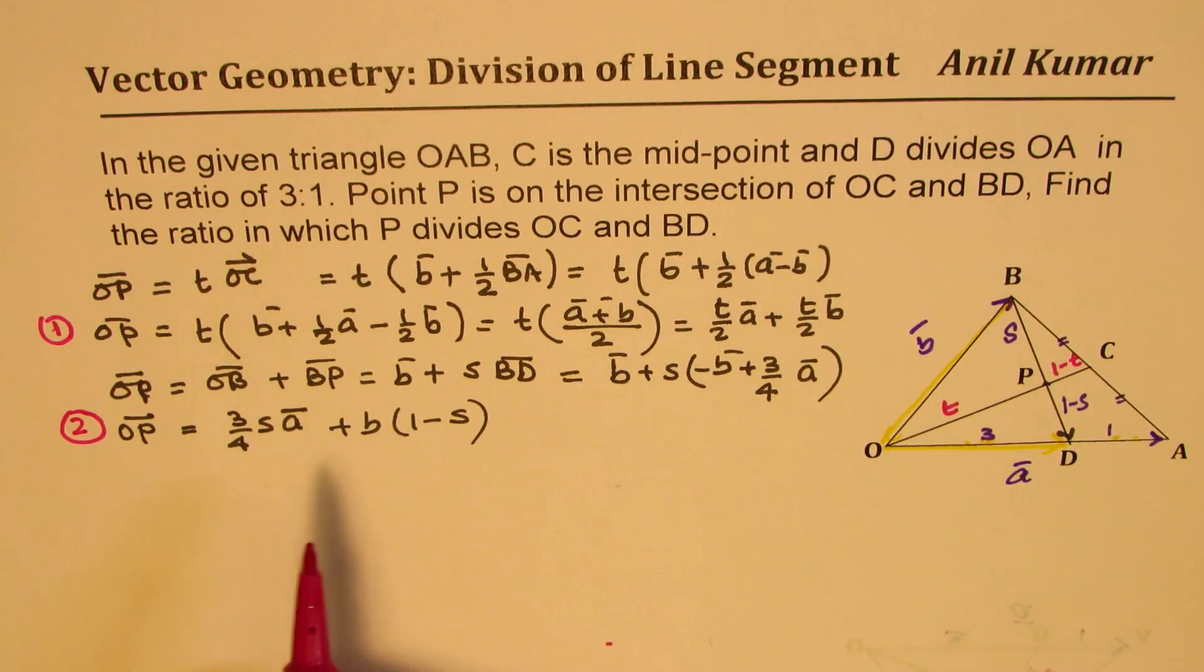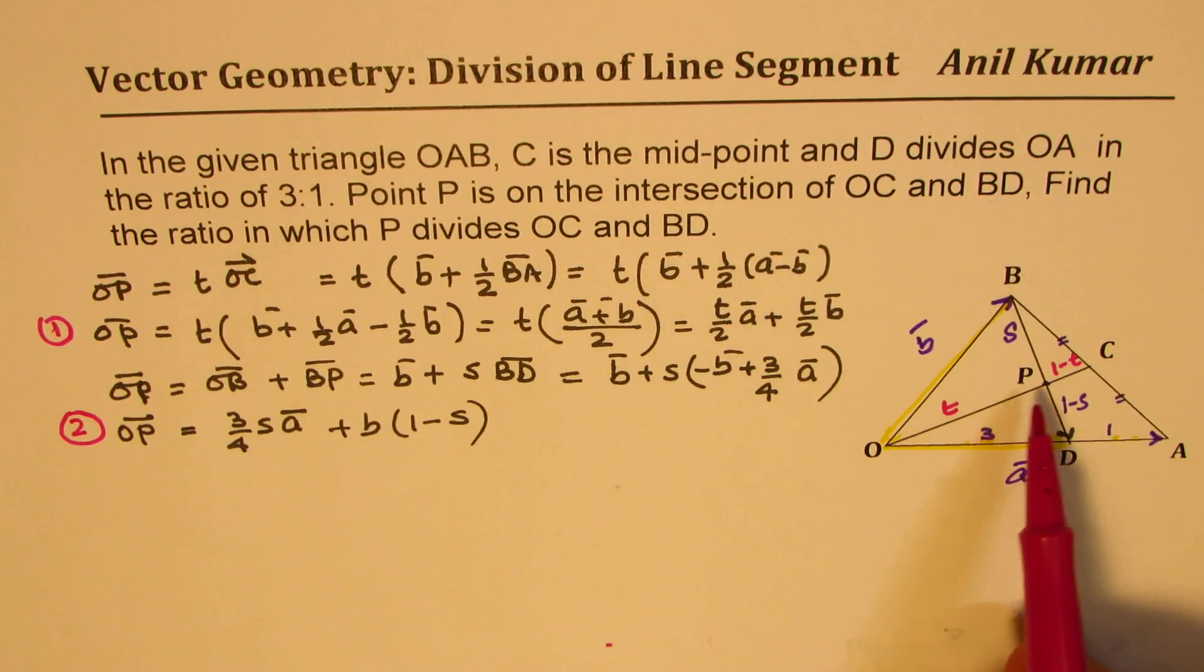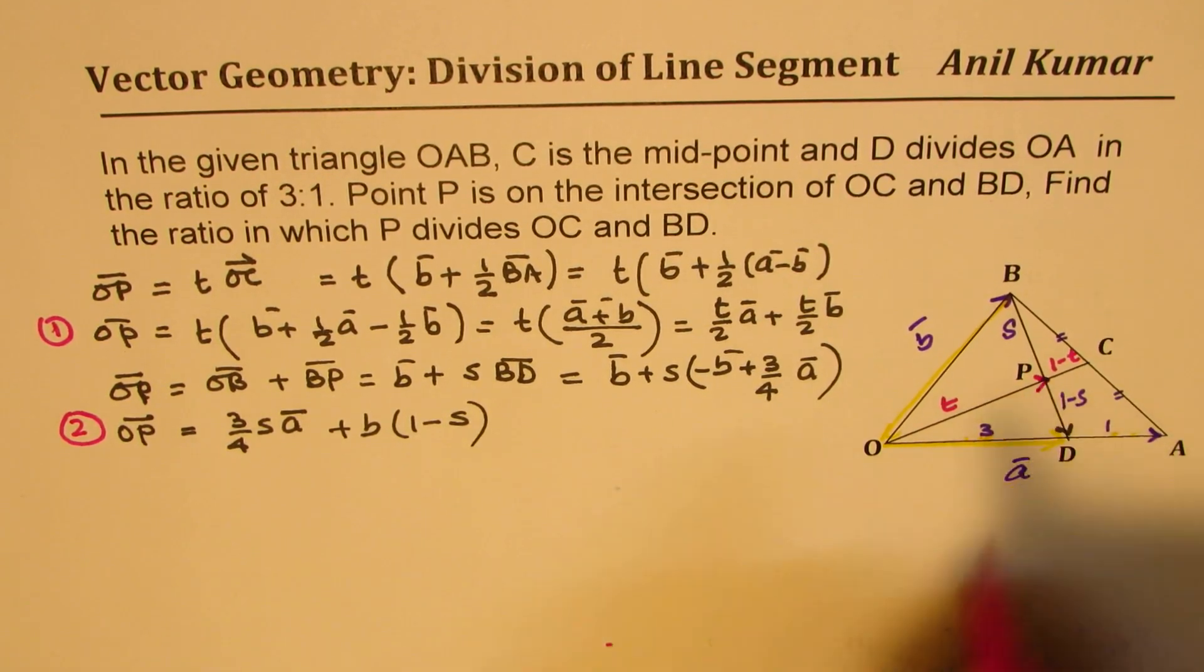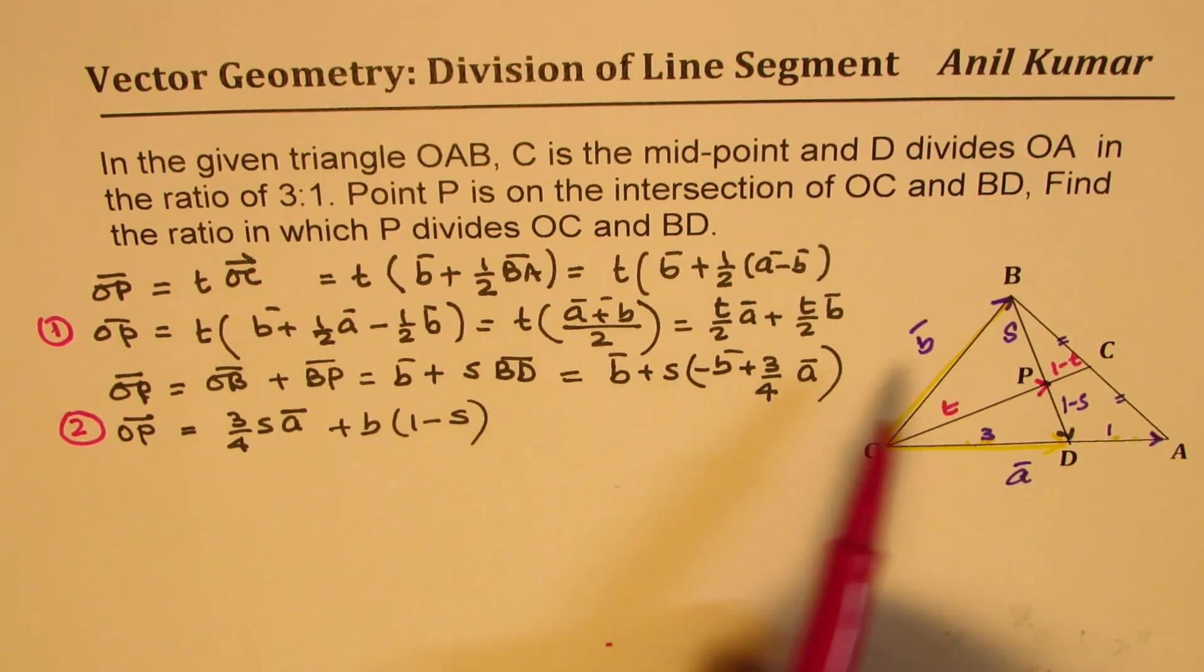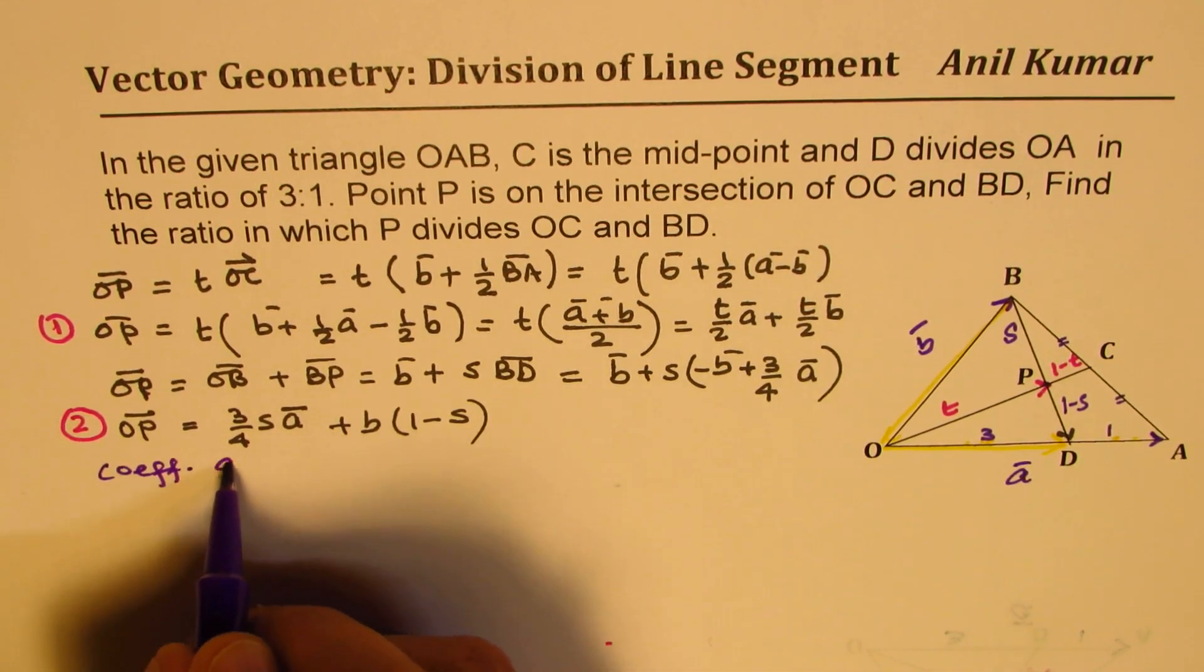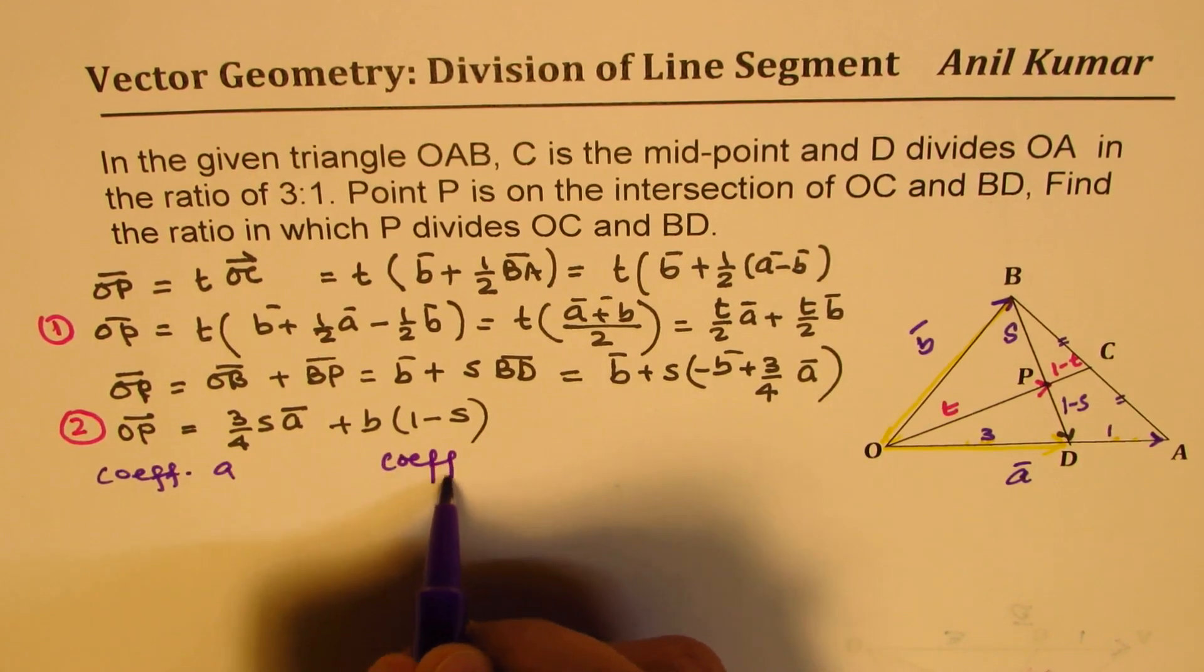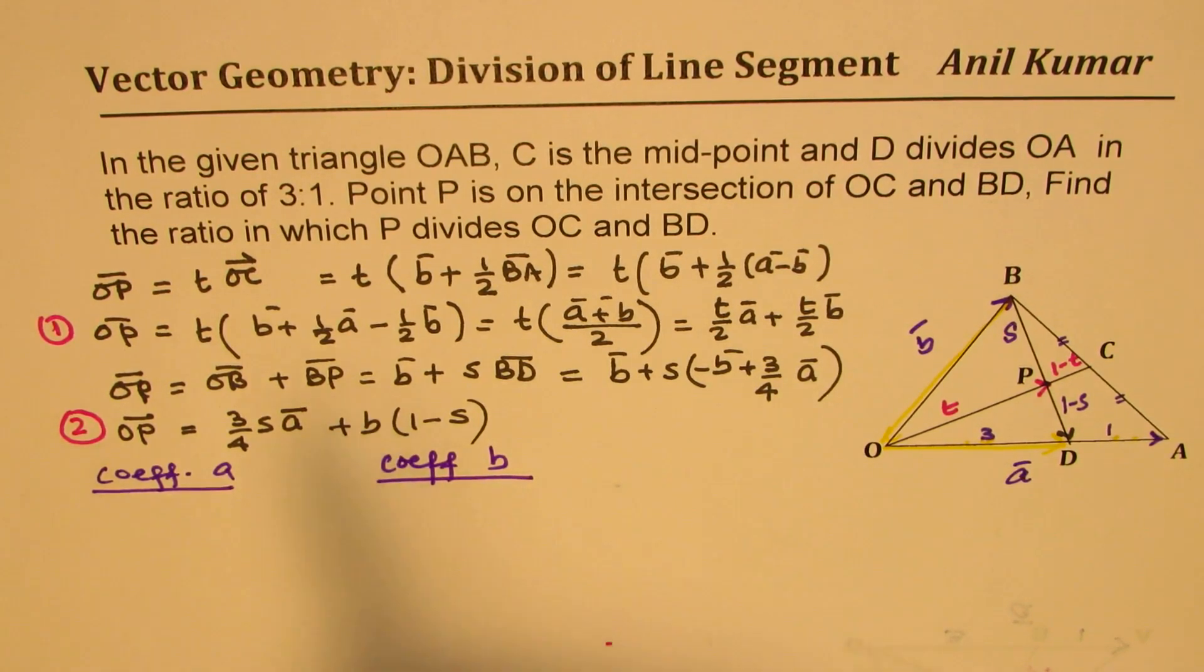Is that clear? So, what we did was, we actually found two different ways of defining OP. And in doing so, we have involved both T and S, the two parameters in which we are really interested in. Now, how do we get their values? So, we get it by comparing coefficients of A and coefficients of B.